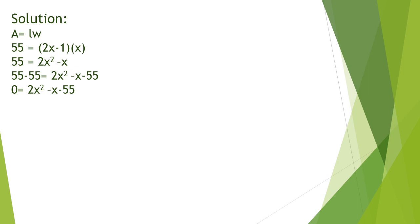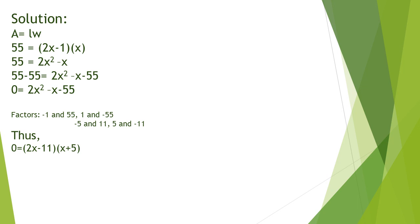To factor this equation, let us find the factors of negative 55: negative 1 and 55, 1 and negative 55, negative 5 and 11, and 5 and negative 11. The factors that satisfy the equation are negative 11 and 5, giving the factored form 2x minus 11 times x plus 5 equals 0. Equating each factor to 0, x equals 11 over 2 and x equals negative 5. Since negative 5 cannot be the width, we use x equals 11 over 2.